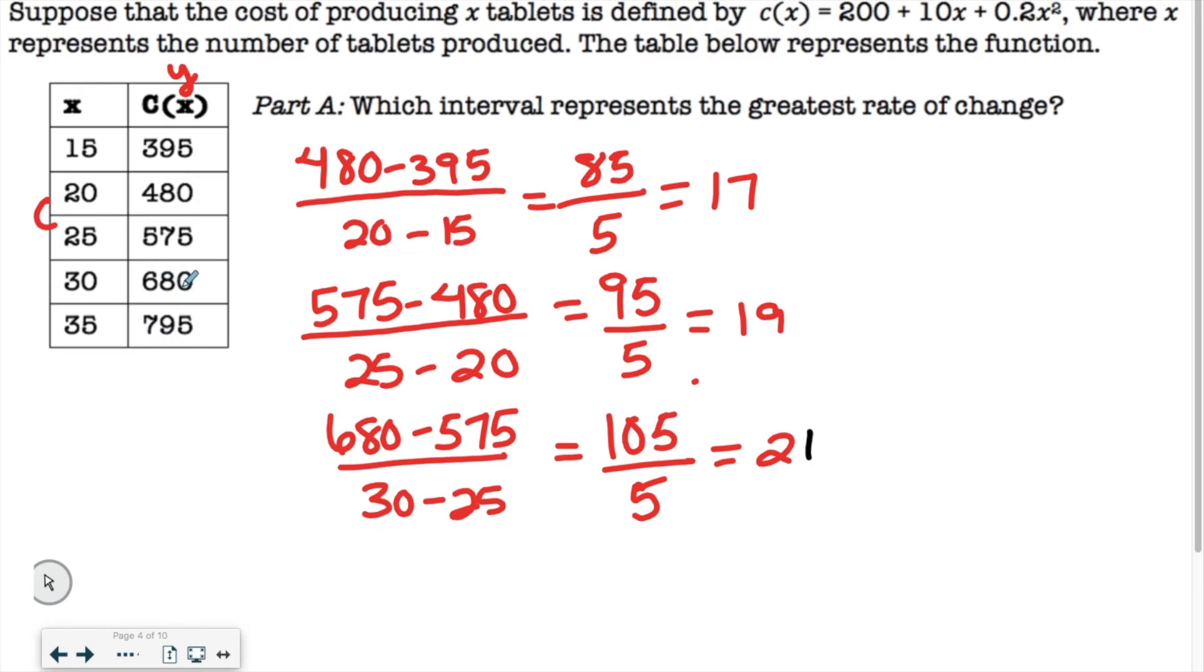And the last one would be 680 to 795. So 795 minus 680. We do the second point first. And 35 minus 30 again is just 5. So I wonder if this is going to be 115. 795 minus 680, 115, because this is increasing by 10 each time. That's why I said 115. And then over 5 again. So this should be 23. Yep. All right. So the last one is the largest interval.